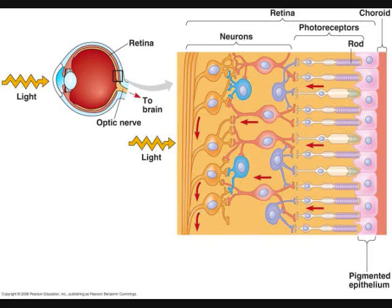Rods are photoreceptors specialized for low light conditions. Unlike cones, rods are unable to detect different colors. Only rods are present around the periphery of the retina, hence rods are responsible for peripheral vision.